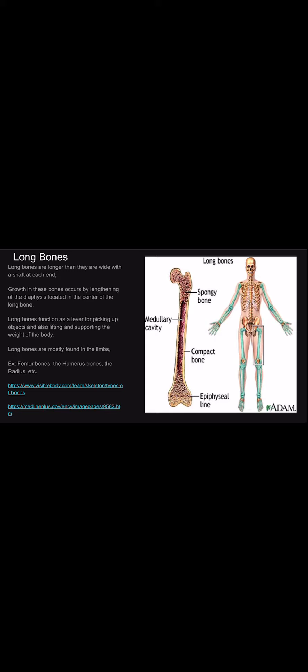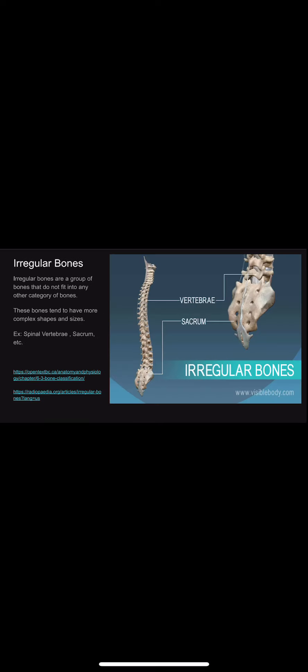Long bones are longer than they are wide, and they have a shaft at each end. Growth in the bones occurs by lengthening the diaphysis, located in the center of the long bone. Long bones function as a lever for picking up objects, and also for lifting and supporting the weight of the human body. Long bones are mostly found in the limbs. Examples of long bones are the femur, the humerus, and the radius.